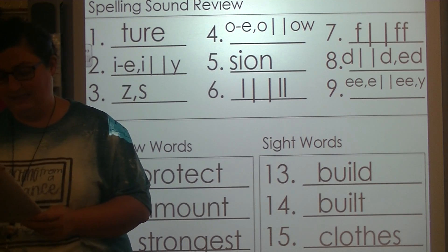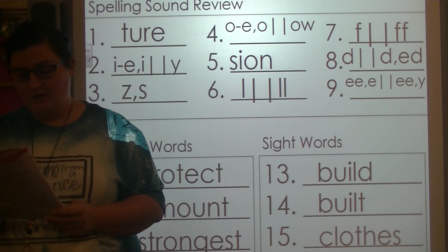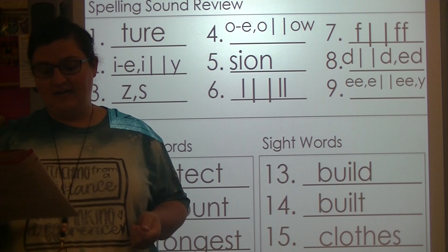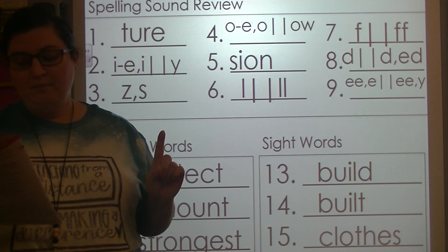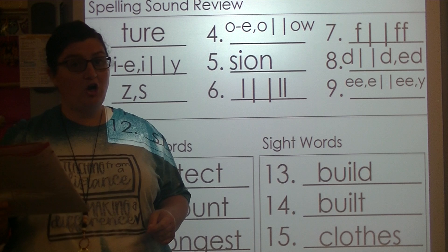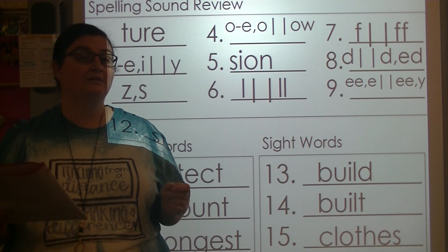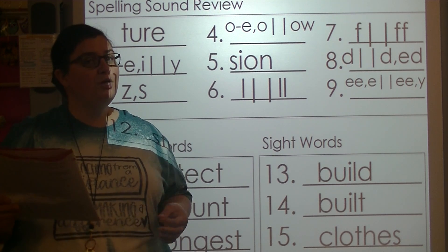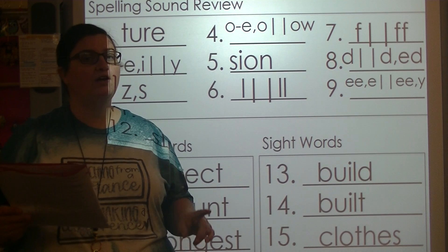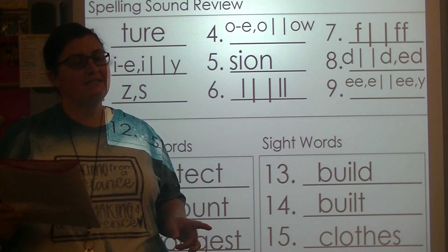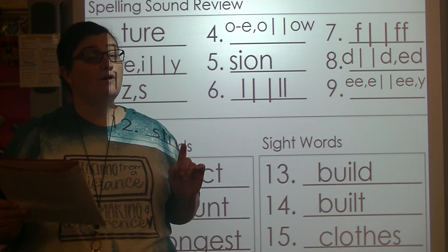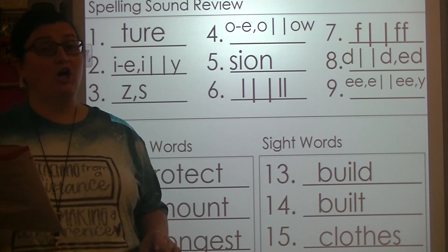Put your finger on number 16. You're going to write the following sentence on the lines. Listen: The moon revolves around the earth. Listen again: The moon revolves around the earth. Say that sentence with me: The moon revolves around the earth.